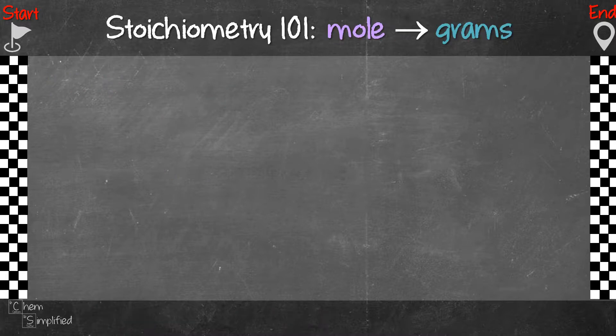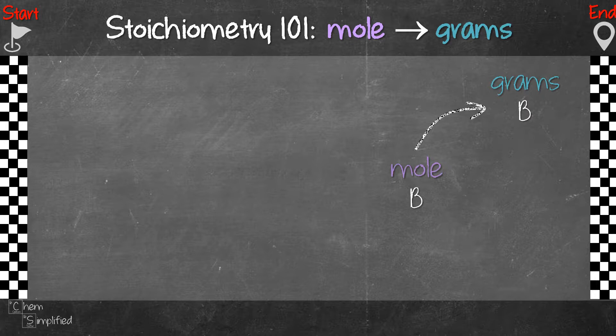Now if you're asked to do the opposite, meaning the question gives you the mole of a substance and wants you to find the mass instead, so now let's just call it substance B. So it's the same thing, you're going mole B to grams B. Now instead of dividing the molar mass, what you'll do is you will multiply the molar mass. So what we've gone through is that going from grams to mole or moles to gram, we need to use the molar mass for that conversion.